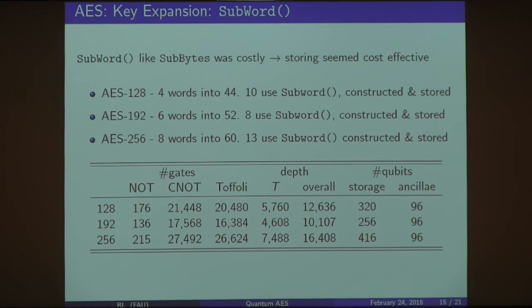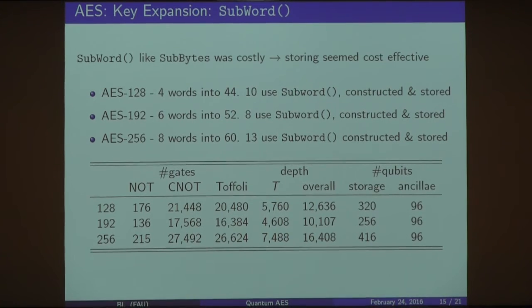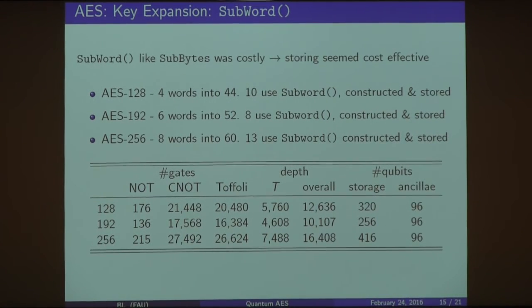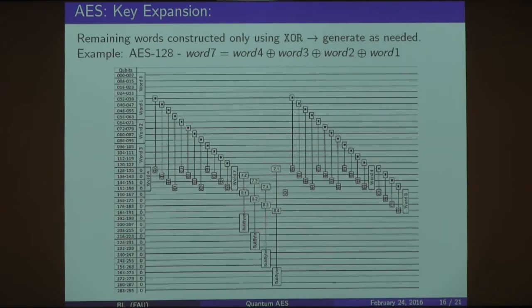That gave us some numbers here. Again, this represents the gates that we used - the NOT, CNOT, and Toffoli gates - breaking that down into the depth, the T-depth or the overall depth, and then the storage and the ancilla, the extra qubits used to compute that. Again, notice the 192, the actual total number of gates and depth and storage at this point is less because of only using the SubBytes every sixth word. We didn't have to store or compute as much from that.